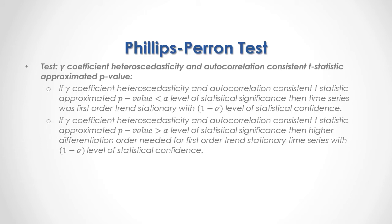What we are testing is the gamma coefficient heteroskedasticity and autocorrelation consistent t-statistic approximated p-value. If this p-value was less than the alpha level of statistical significance, then the time series was first-order trend stationary with 1 minus alpha level of statistical confidence. On the other hand, if the p-value was greater than the alpha level of significance, then a higher differentiation order was needed for first-order trend stationarity with 1 minus alpha level of statistical confidence.